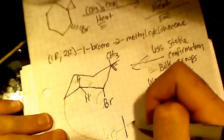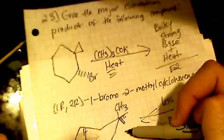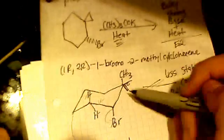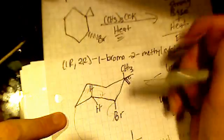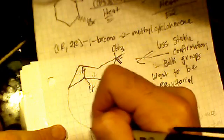So the tert-butoxide - I thought maybe this having to be in the equatorial position, this methyl group coming out, might have caused some steric hindrance, stopping this bulky base from coming in. But obviously that's not the case.